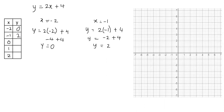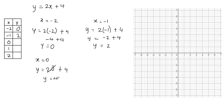Now we're going to plug in x equals 0 into the equation and see what we get for y. We have y equals 2 times 0 plus 4. 2 times 0 is 0, so that term drops out, and 0 plus 4 gives me 4. So when x is 0, y is equal to 4.